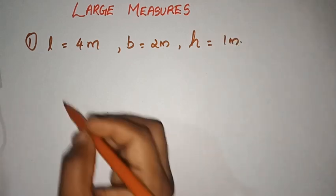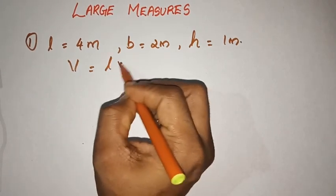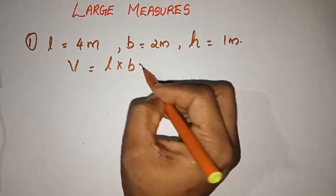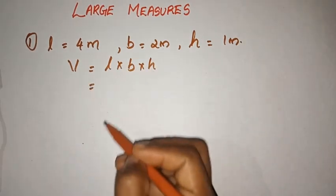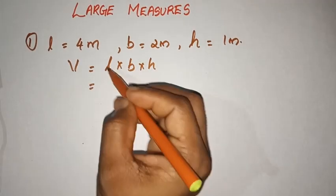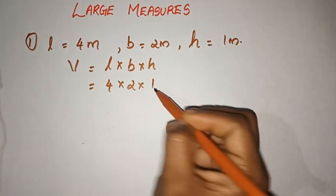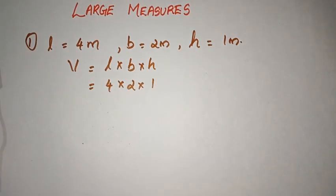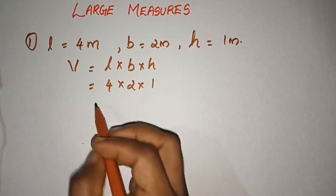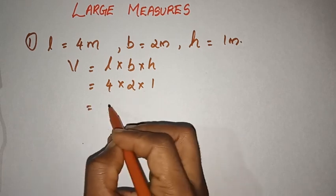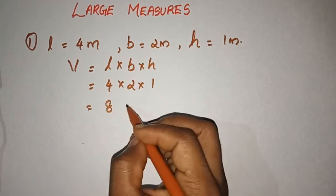You can use volume. Volume is equal to length into breadth into height. The length is 4, breadth is 2, height is 1. So 4 into 2 is 8. The volume is 8 cubic meters.